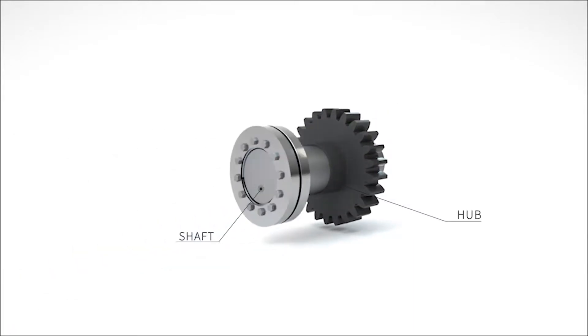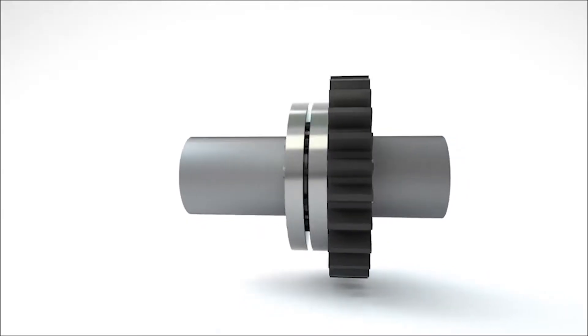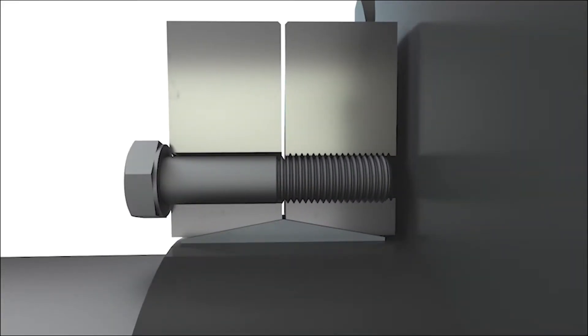You start by placing the shrink disc over the hub and shaft you want to join. As you tighten the locking screws to the recommended torque, the shrink disc's outer and inner thrust rings are drawn together, compressing the hub tightly around the shaft.